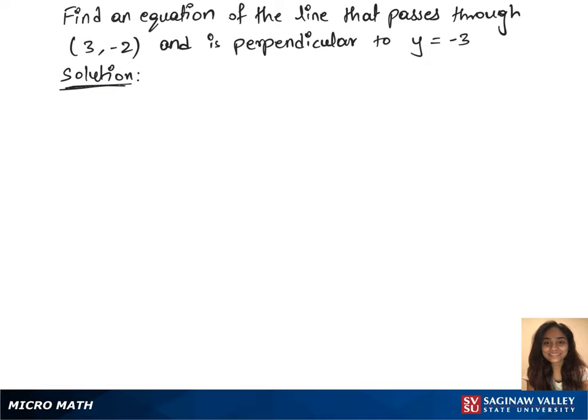To solve this question, we'll first find the slope of the given equation y equals negative 3. The slope is 0, and that is for a horizontal line. Since we are finding a vertical line, we'll use the formula x equals C.